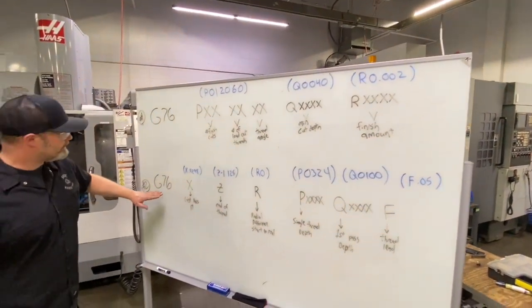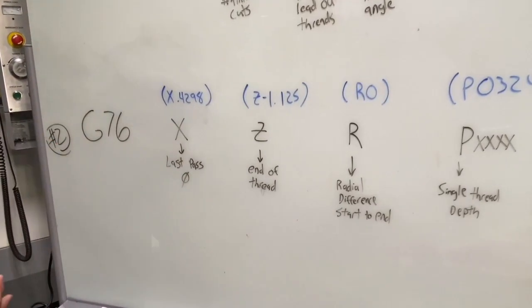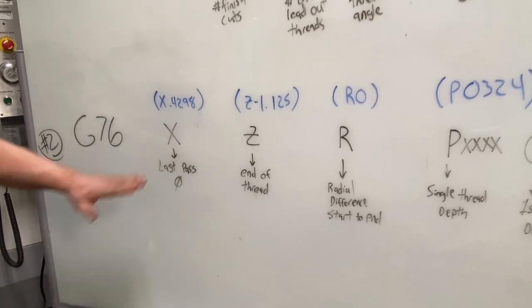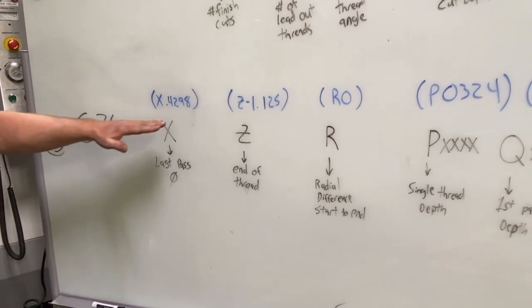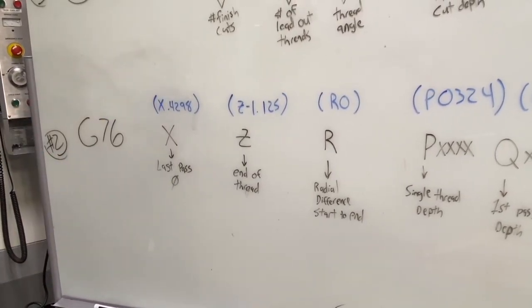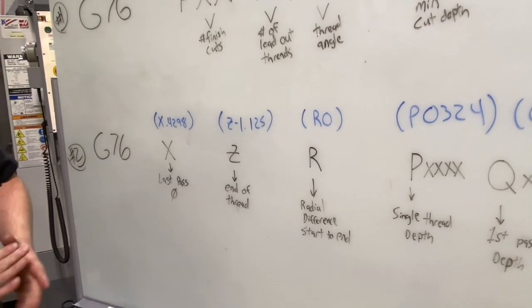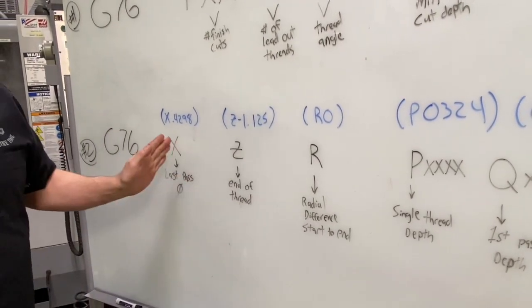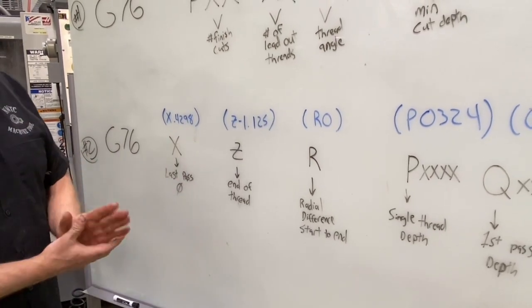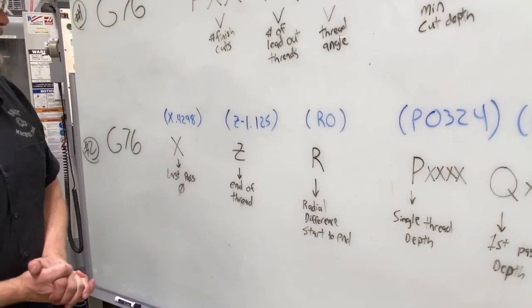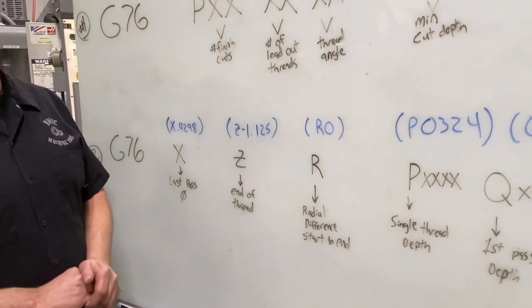Now we go down to our second line G76 — two consecutive lines. This second G76 starts with X, which is our last pass in the X-axis, using the minor diameter we calculated. So that's X-0.4298. The next is Z, the end of our thread — on our blueprint the threads went back one inch in the Z-axis. I'm using the far left side of my insert as the reference point, so I go half the insert width past that one inch: Z-negative-1.125, as I have a quarter-inch wide insert.